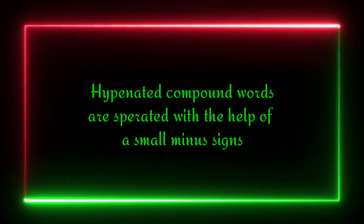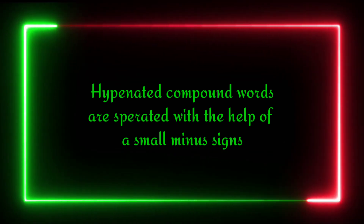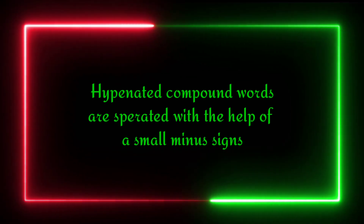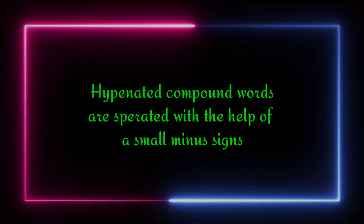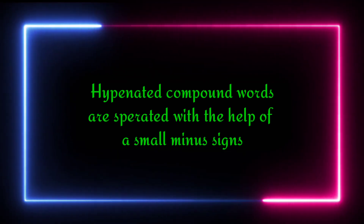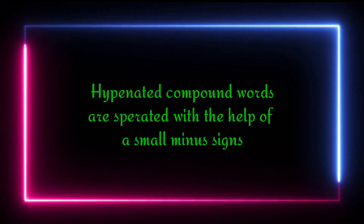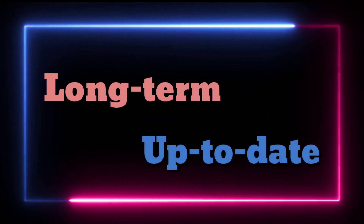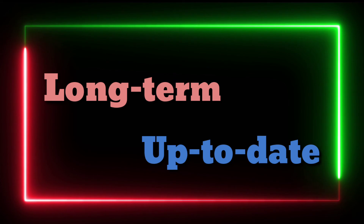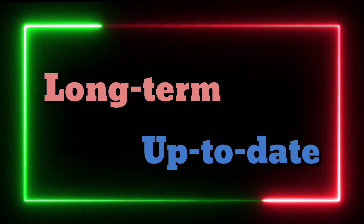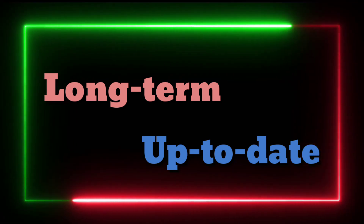Lastly, hyphenated compound words are words which are often separated by a small minus sign. For example, 'long-term' and 'up-to-date' — both these words have small dashes in between.